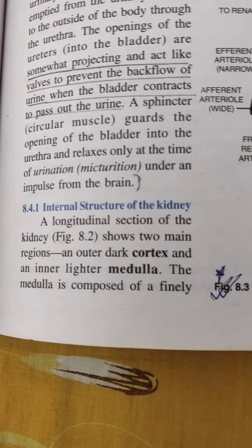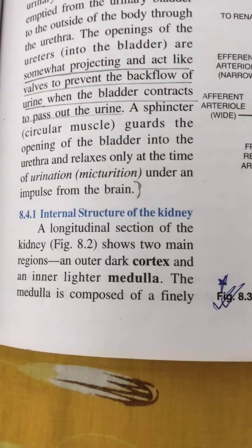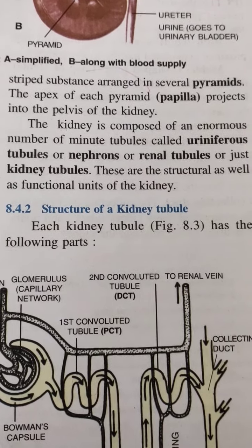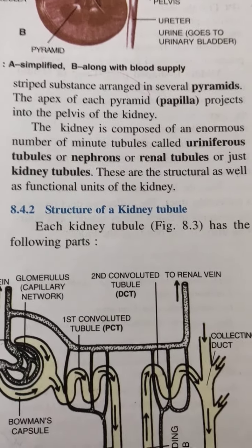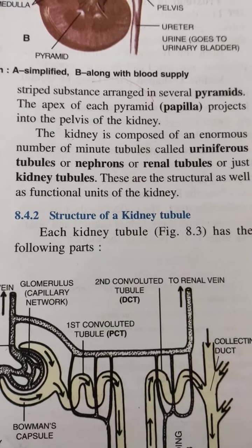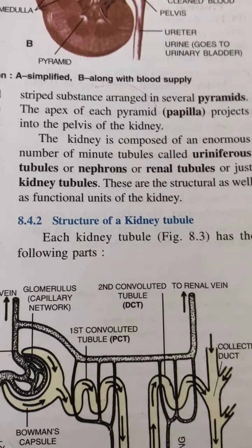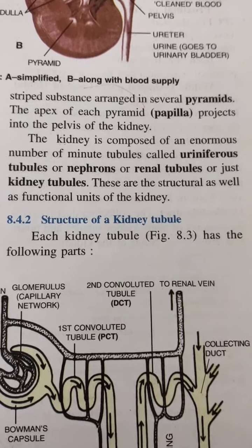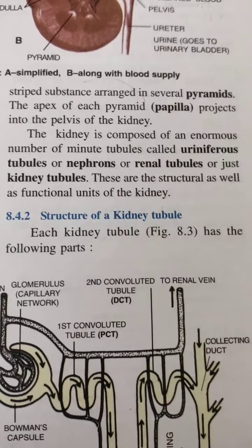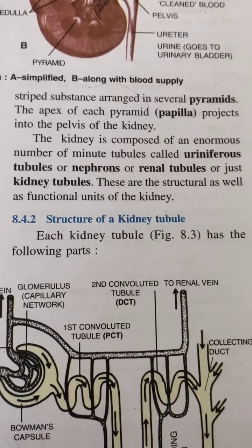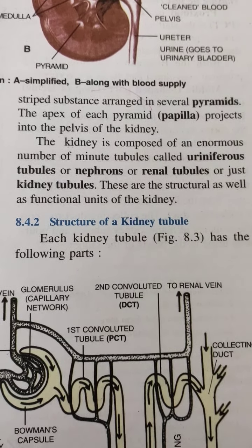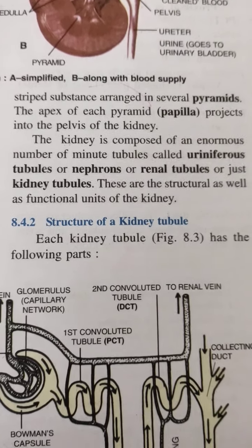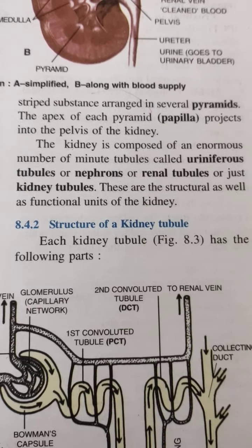The cortex is the outer dark layer and the medulla is the inner lighter part. The medulla is composed of a finely striped substance arranged in several pyramids. The apex (tip) of each pyramid, known as the papilla, projects into the pelvis of the kidney. The kidney is composed of an enormous number of minute tubules called uriniferous tubules, also known as nephrons, renal tubules, or kidney tubules.